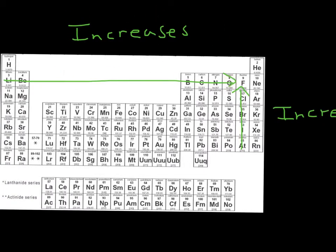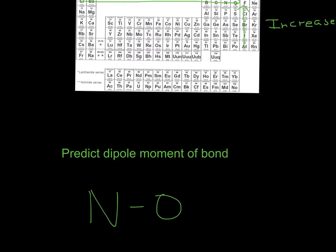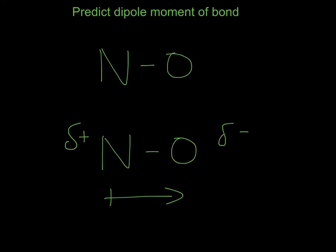Since oxygen is to the right of nitrogen, oxygen will be more electronegative. That means the arrow will point towards oxygen, giving oxygen a partially negative charge and nitrogen a partially positive charge. I hope that helped, and thanks for watching.